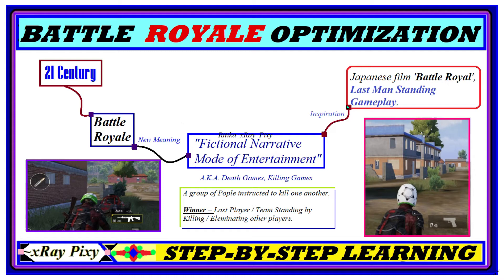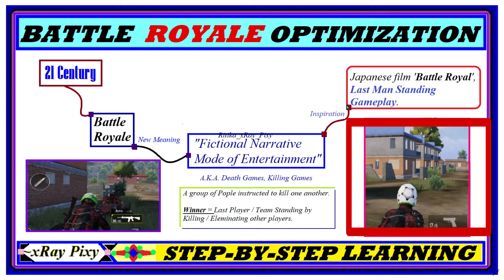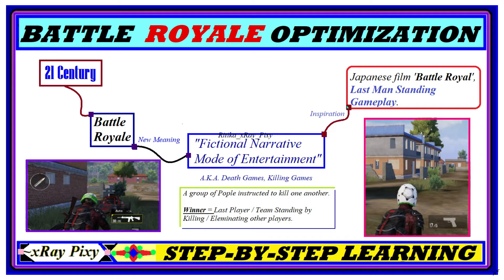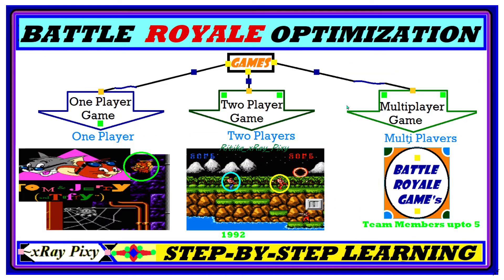Battle royal video games are inspired by a Japanese film called Battle Royal. In these video games, a group of players are instructed to kill one another, and the aim is to be the last player or team standing by eliminating other players. These are multiplayer video games where multiple individuals can play all together, as opposed to single-player games where only one individual plays at a time.